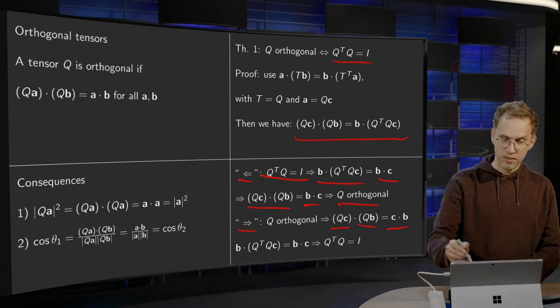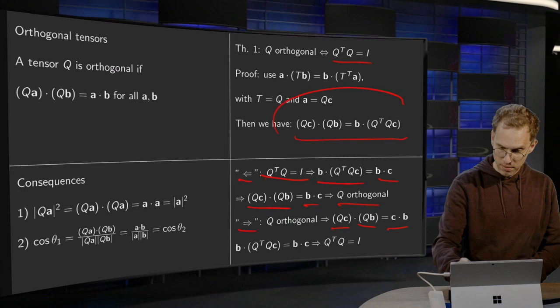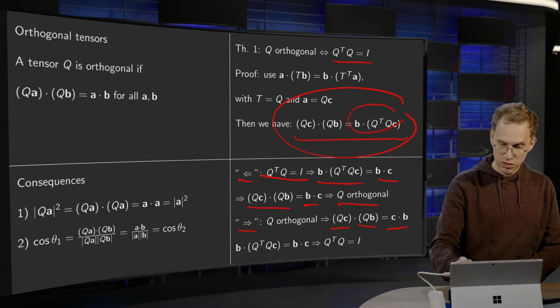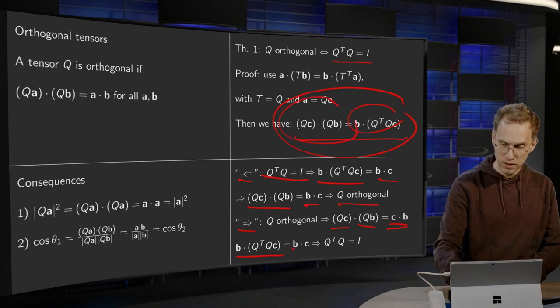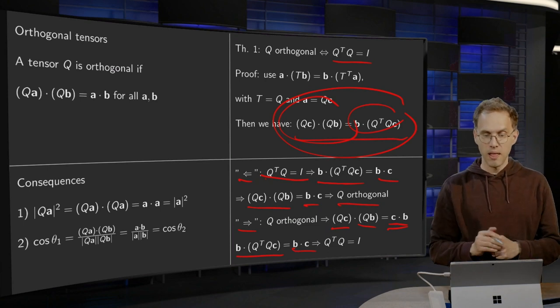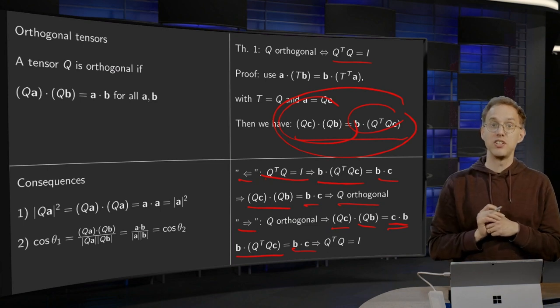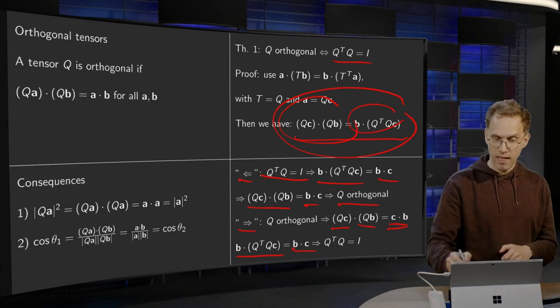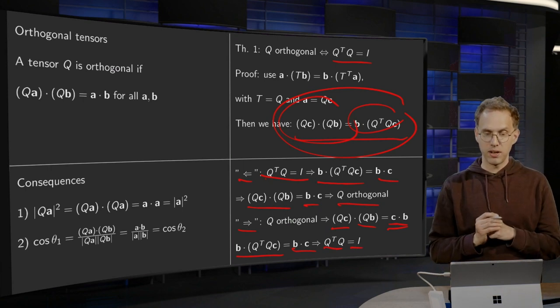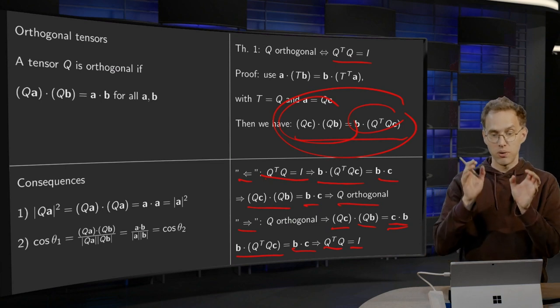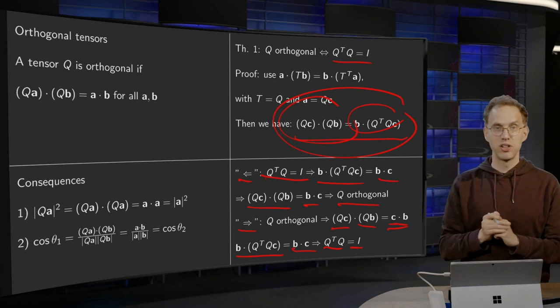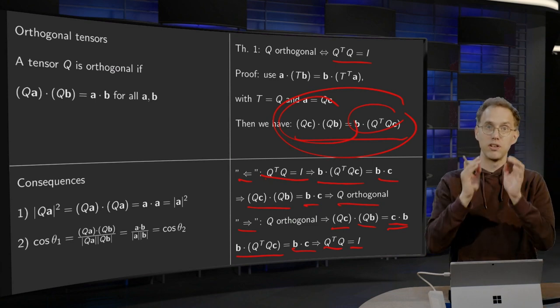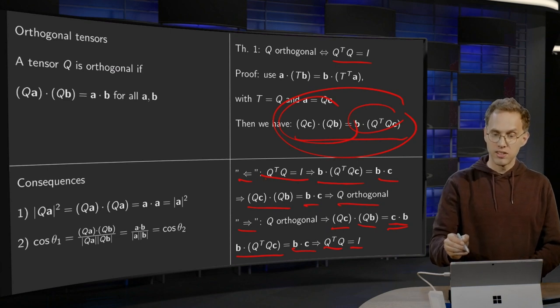Then we use the formula. So b·(Q^T Qc) = (Qc)·(Qb) = c·b. Comparing left and right, this is only true for all b and c if Q^T Q is indeed the identity tensor. So the left implies the right, and we have the equivalence: Q is orthogonal if and only if Q^T Q equals identity.